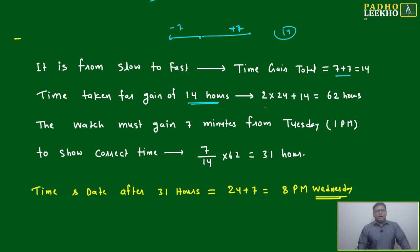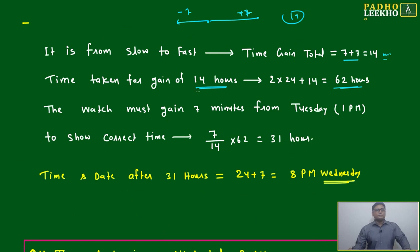Time taken for gain of 14 minutes: 2 × 24 + 14 = 62 hours. It is not hours, it is minutes. Time taken for gain of 14 minutes, how much time it is taking? 2 × 24 + 14. How we calculated: Tuesday 1 PM to Friday 3 AM, how much time will it be? Two days complete, Tuesday to Wednesday, Wednesday to Thursday. Two days complete. Afterwards, 1 PM on Thursday to 3 AM on Friday is 14 hours. Then total 62 hours. Means the clock is gaining 14 minutes in 62 hours.